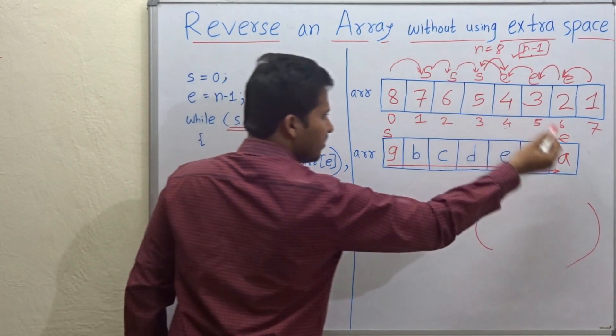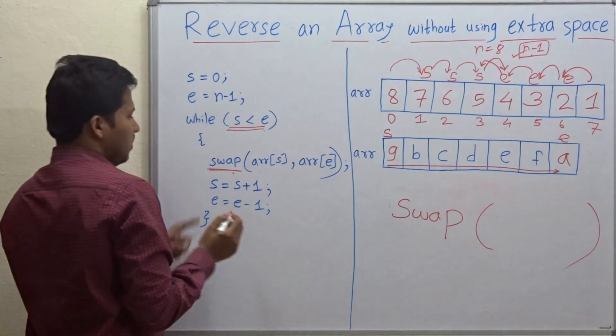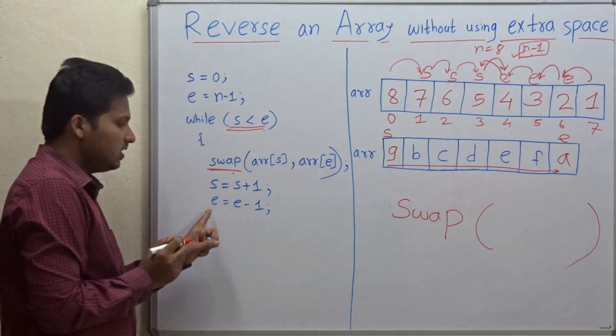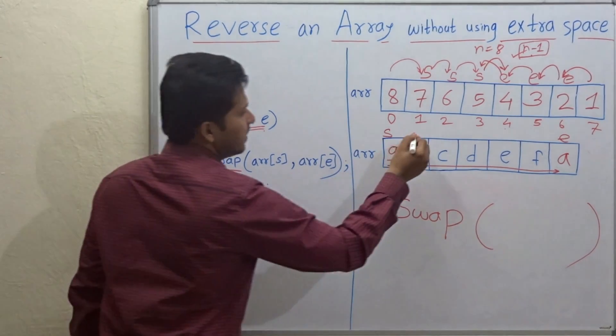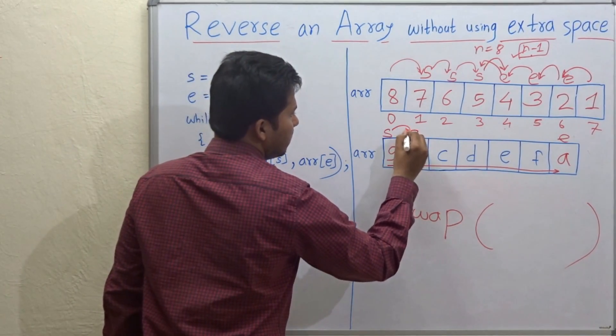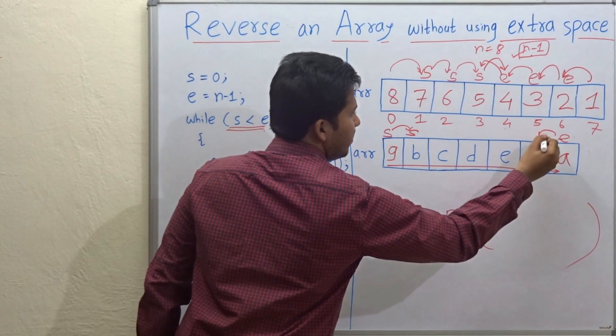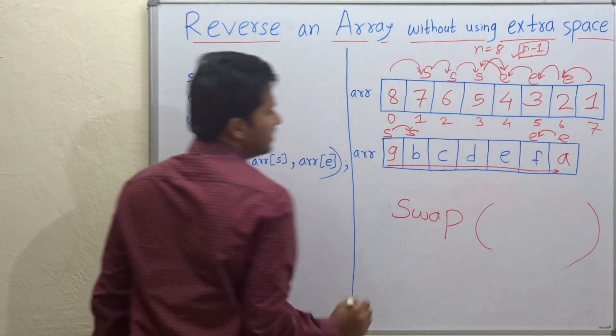This G came here and A went there. Now S equals S plus 1, E equals E minus 1. So S will come here and E will be decremented at this position.